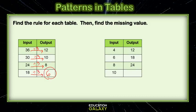For my second table, I want to get 4 to 12, 6 to 18, 8 to 24. Well, these are times 3. So to figure out 10, I just need to multiply it by 3. And 10 times 3 is 30. So that must be the missing number.